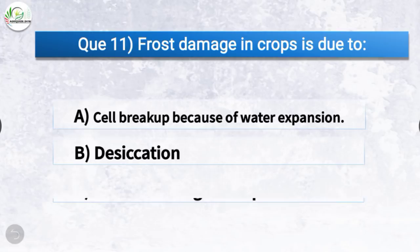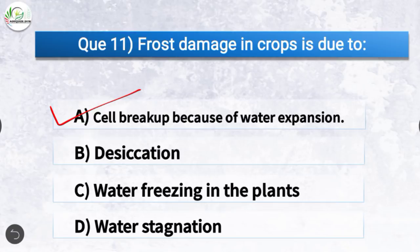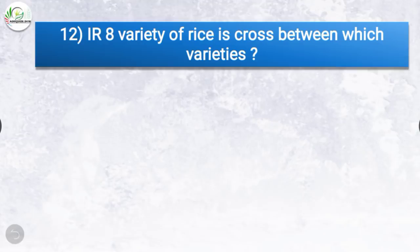Question number 11: Frost damage in crops is due to? The correct answer is option A, cell breakup because of water expansion. Frost damage in crops is due to cell breakup because of water expansion.